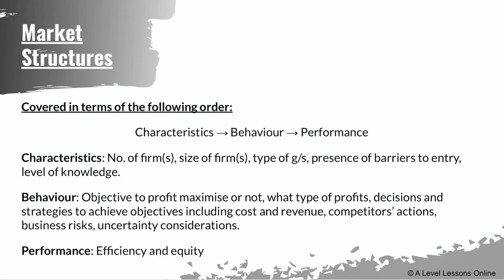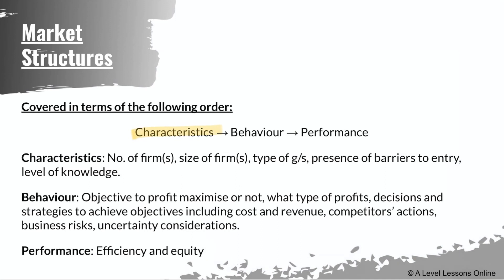I'll be covering all four market structures in this order: characteristics, followed by behavior, followed by performance. All four market structures follow this same framework — they all have certain characteristics, they all have different behaviors, and they all perform differently as well.